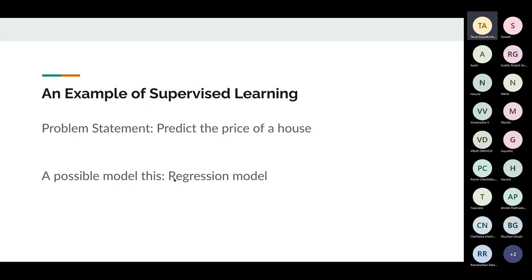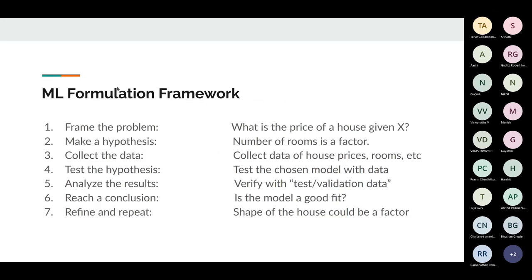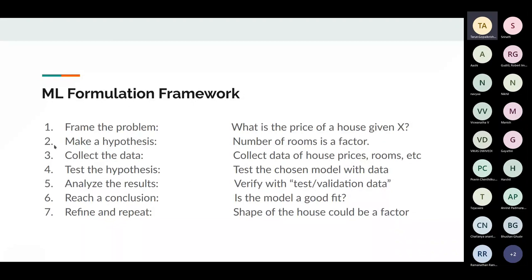We'll be using a very basic machine learning model called regression. Regression, if you're familiar, is basically fitting a line — a best fit curve that you use to fit a bunch of data points. These are the seven steps you would always take going from a problem to the solution.